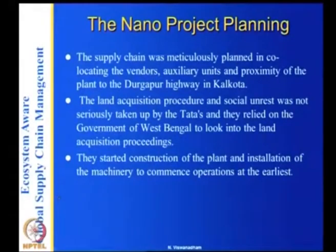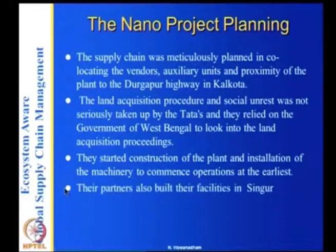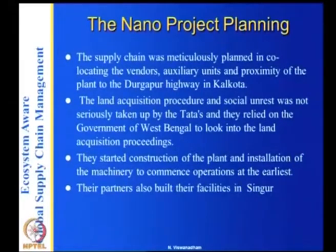Tata's relied on the government of West Bengal, which also took the judiciary into the land acquisition procedures, and started building the plant and installing machinery to commence operations at the earliest. Their partners also built. Approximately 15,000 crores of rupees were spent in making this plant. But what went wrong? Eventually, all of us know that Tata's had to leave, and the project came to a grinding halt. Tata's had to move to another state before the Nano was even rolled out.